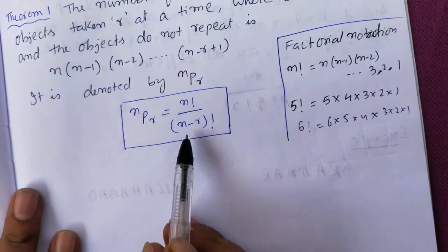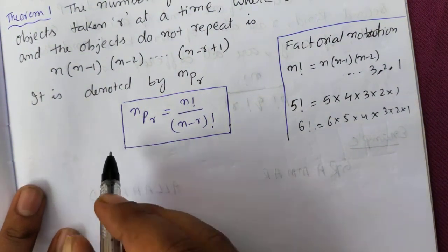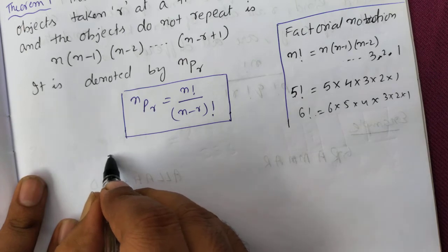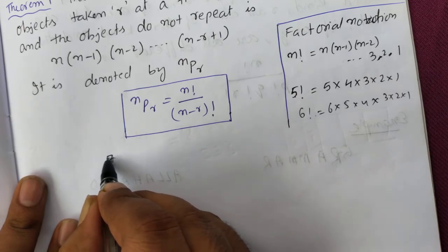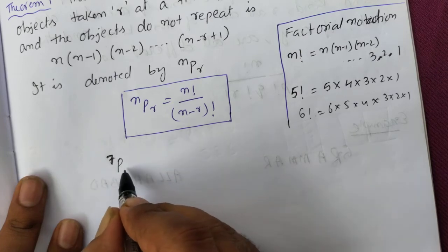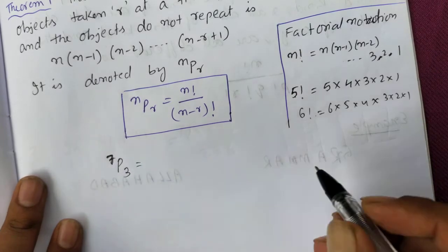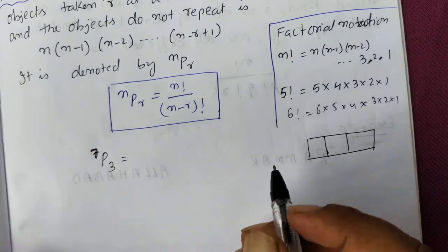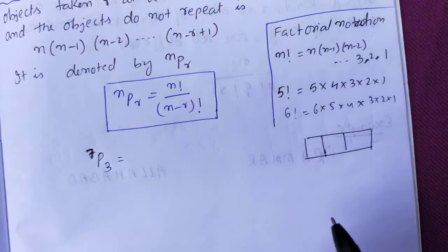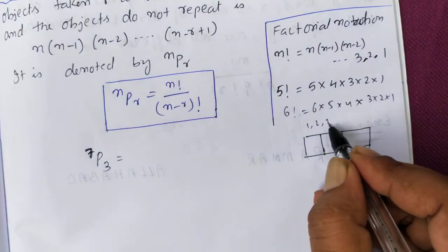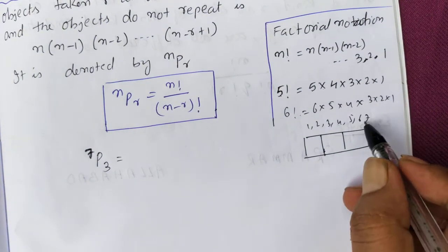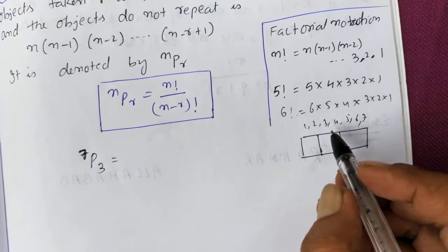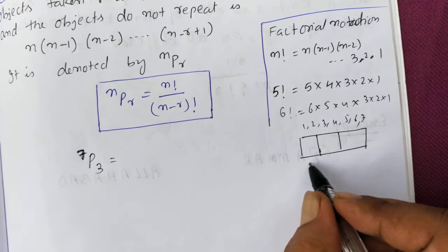To apply the NPR formula: suppose I have 7 different digits — 1, 2, 3, 4, 5, 6, 7 — and I want to make a 3-digit number without repetition. This is 7P3. Using the formula, 7P3 = 7! ÷ (7−3)! = 7! ÷ 4!.